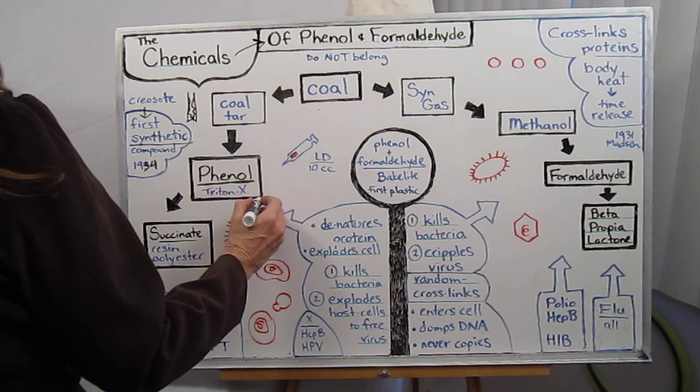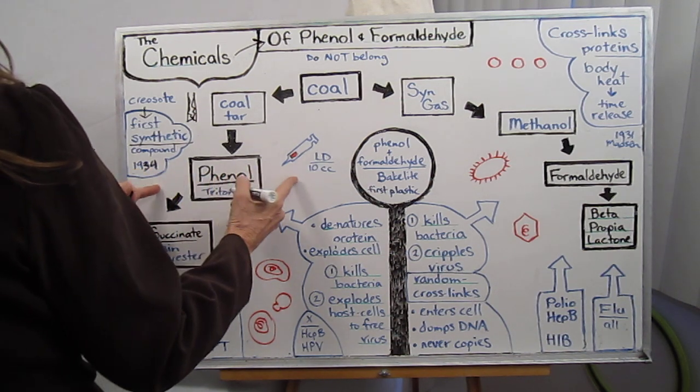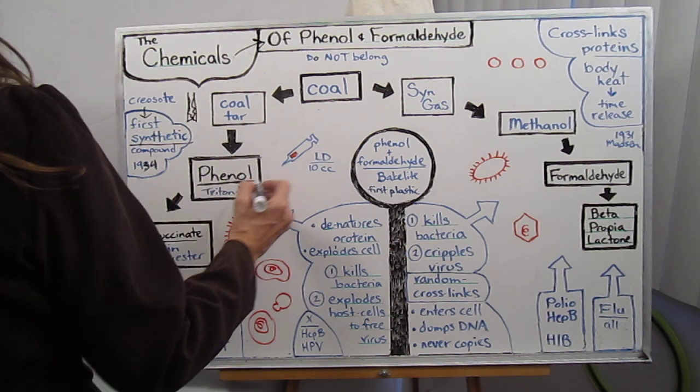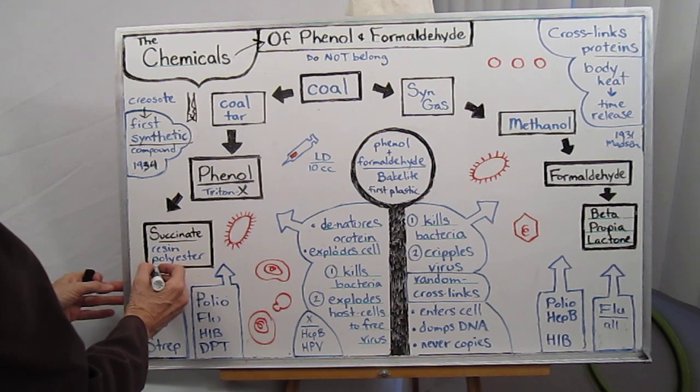Sometimes they called it Triton X in the vaccines. But you'll see the word phenol within a larger chemical compound. Sucanate is a derivative. It's a resin that gets turned into a polyester.